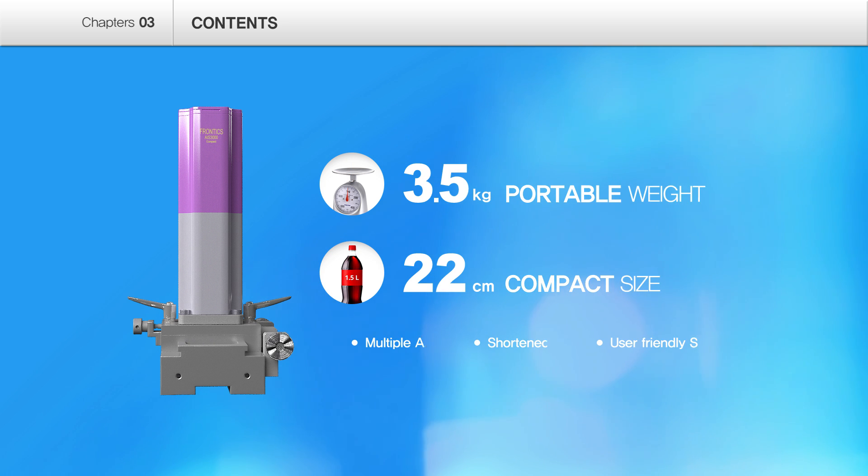AIS 3000 Compact Equipment weighs 3.5 kilograms with 22 centimeters length. It is similar to the size of 1.5 liter cola bottle, and it has different attachments to conduct testing on-site easily with application to tested objects.